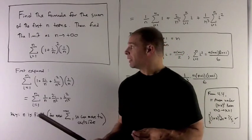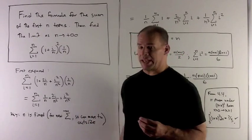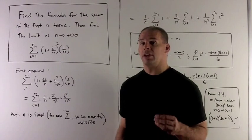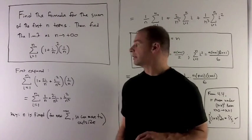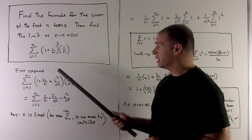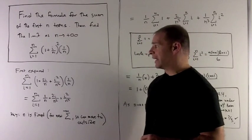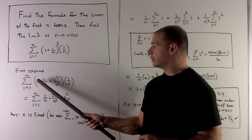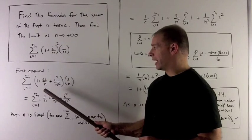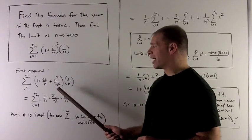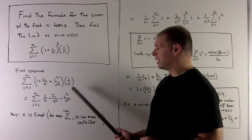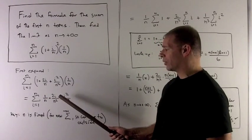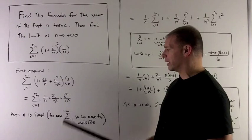So this here comes up when we take areas, so at the end we'll tie it back to this business of area under what curve. So my first step is just to expand this out and see what happens. We're just going to expand the square: 1 plus 2i/n plus i squared over n squared times 1/n, and then we multiply the 1/n through which gives me 1/n, 2i over n squared, i squared over n cubed.